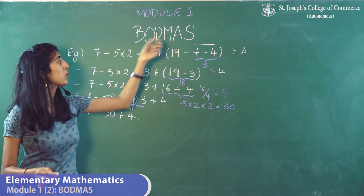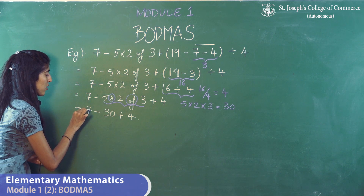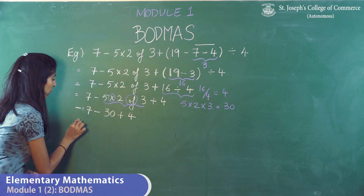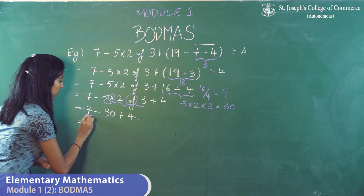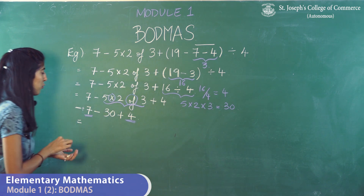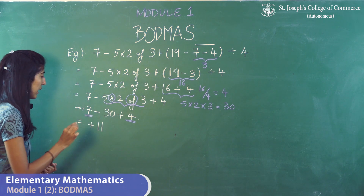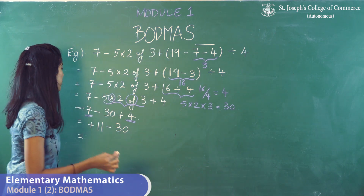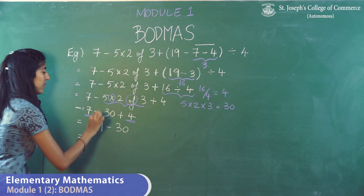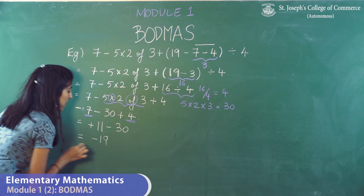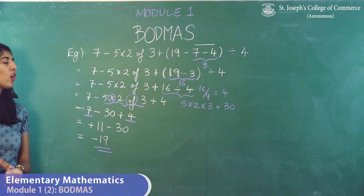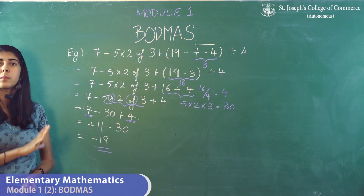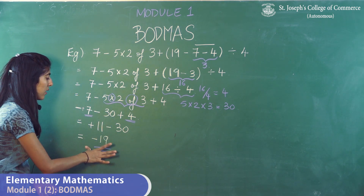Next we add. Since 7 has no preceding sign, it is assumed positive. We add 7 plus 4, giving plus 11, so we have plus 11 minus 30. Then we subtract: 11 minus 30 gives minus 19. That is your answer. Solving in any other order — mixing division, multiplication, addition, and subtraction randomly — would not give this answer.